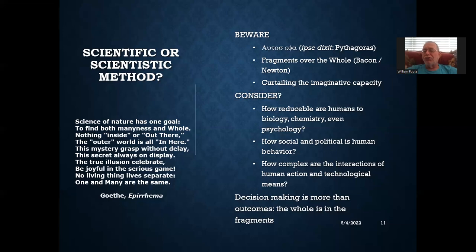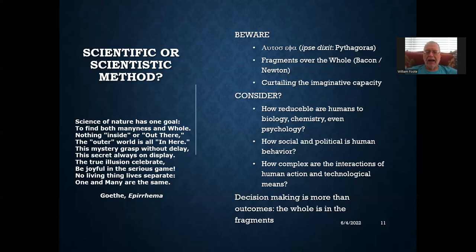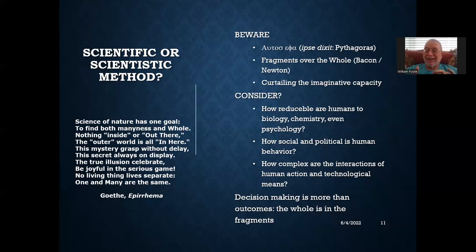We're going to consider some questions: how reducible are humans to simple biology, chemistry, even psychology? I don't believe we are — what we're doing right now is not reducible. How social and political is human behavior? There's politics in every organization. There are many other things than what comes out of this spreadsheet to consider when making a decision. How complex are the various interactions involved in a decision, especially the unintended consequences of our actions and the human-technological interface?